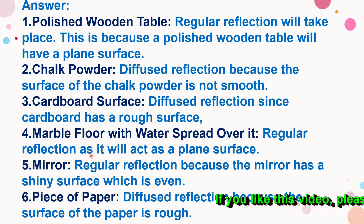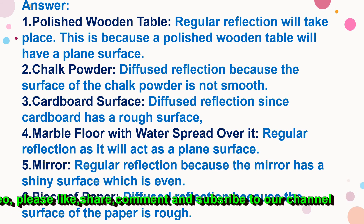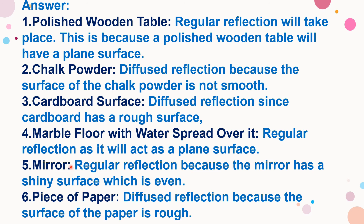A piece of paper — diffuse reflection, because the surface of paper is rough. To summarize: regular reflection occurs for the polished wooden table, marble floor with water spread over it, and mirror. Diffuse (irregular) reflection occurs for chalk powder, cardboard surface, and piece of paper.